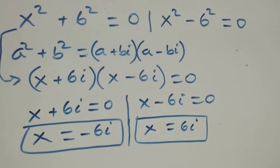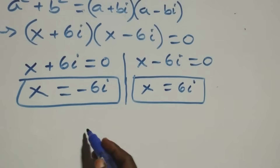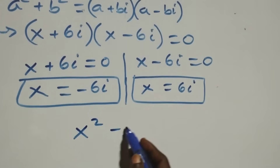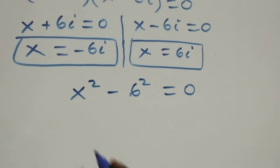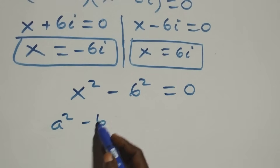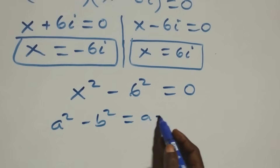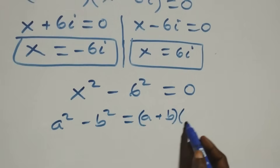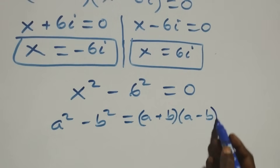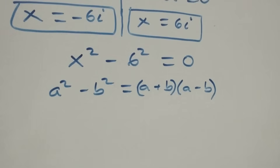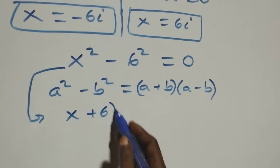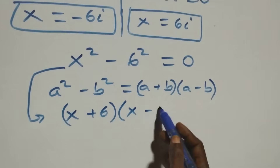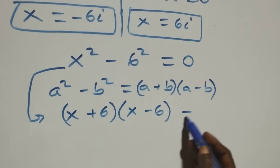For the second case, x² minus 6² equals zero. This again follows the difference of squares identity: a² minus b² equals (a+b)(a-b). So it becomes (x + 6)(x - 6) equals zero.